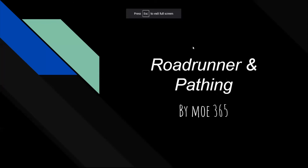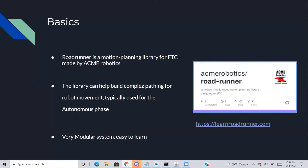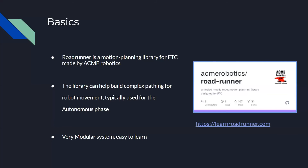I'll be showing you Roadrunner and Palette. Roadrunner is a motion planning library for FTC made by Acme Robotics — it's a library for complex robot pathing, especially during the autonomous phase. You can make the robot move in almost any direction with instructions. It's very modular and super easy to learn.